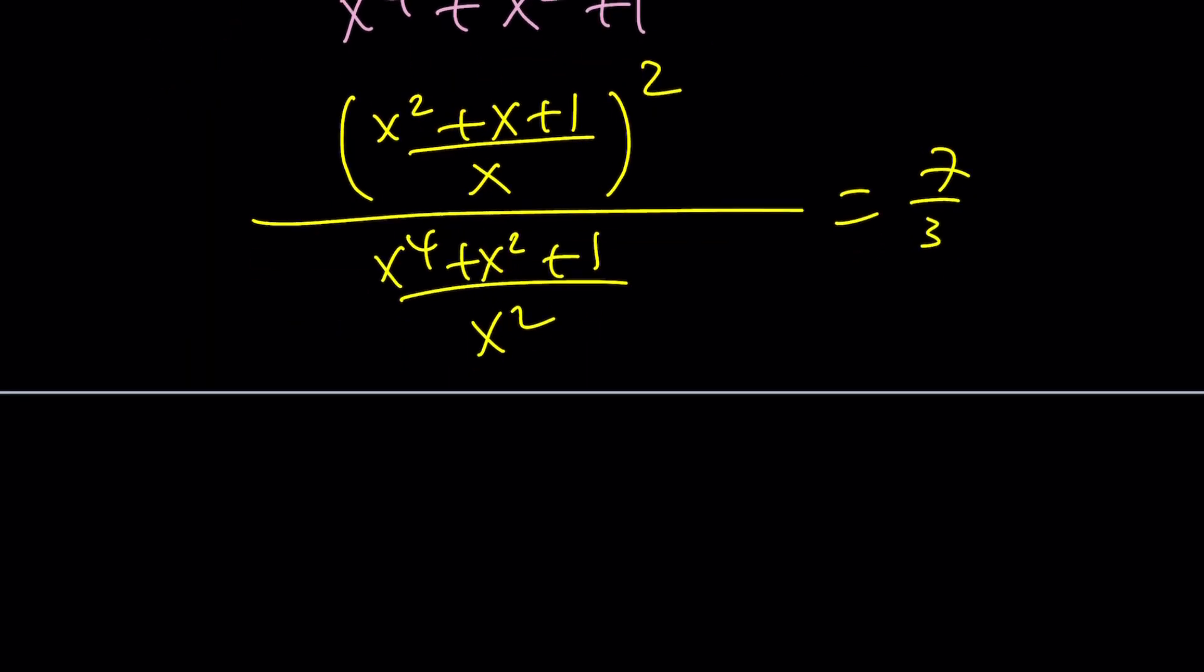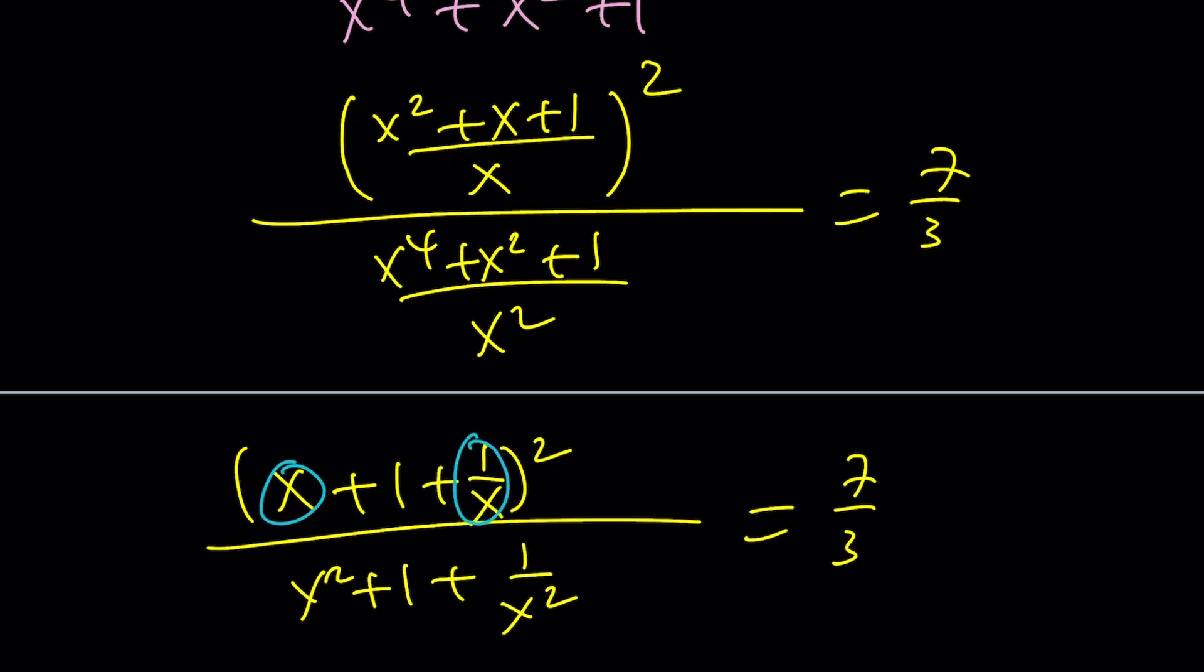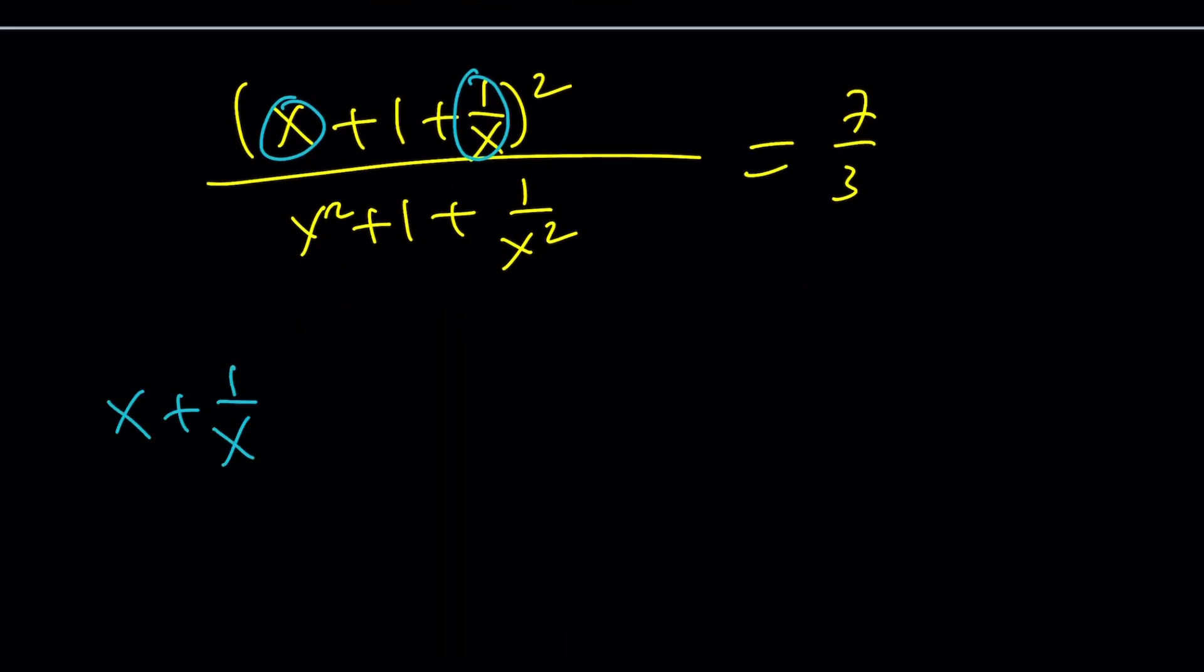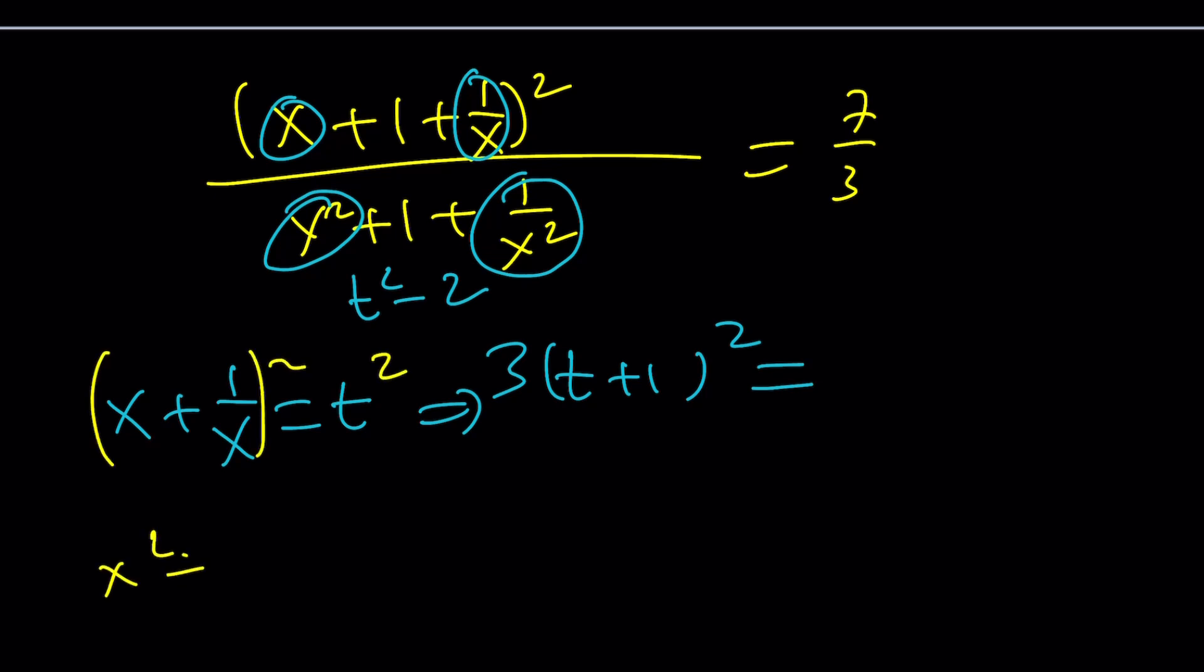And then inside, we get x plus 1 plus 1 over x squared. And at the bottom, we get x squared plus 1 plus 1 over x squared. Here's the tricky part. Substitution. If you go ahead and call this plus this something, so I'm going to set x plus 1 over x equal to t. And from here, I get t plus 1 squared, multiply by 3. Let's cross multiply at the same time. And this is going to be t squared minus 2, because if you square t, you're going to get x squared plus 1 over x squared plus 2 equals t squared. And this is going to be t squared minus 2. Make sense?